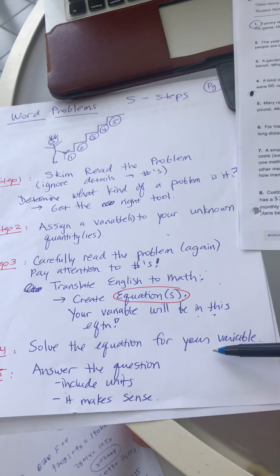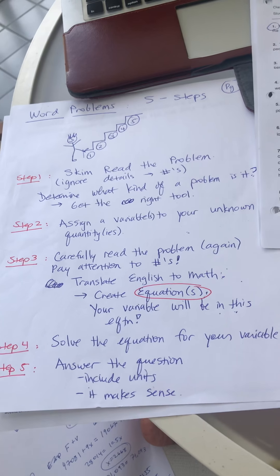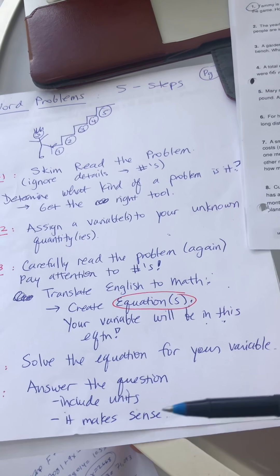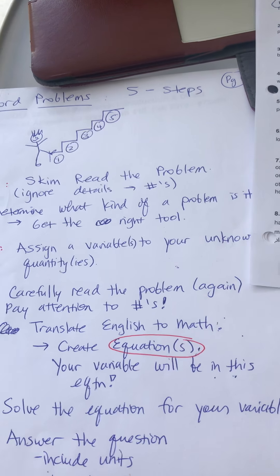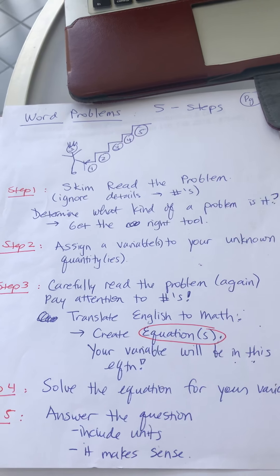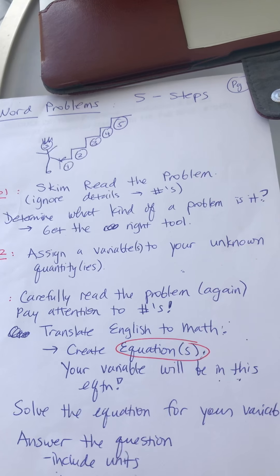Step four is solve the equation for your variable, and then step five is to answer the question and include units and make sure that your answer makes sense. So that was a quick run through of what we did on Wednesday.